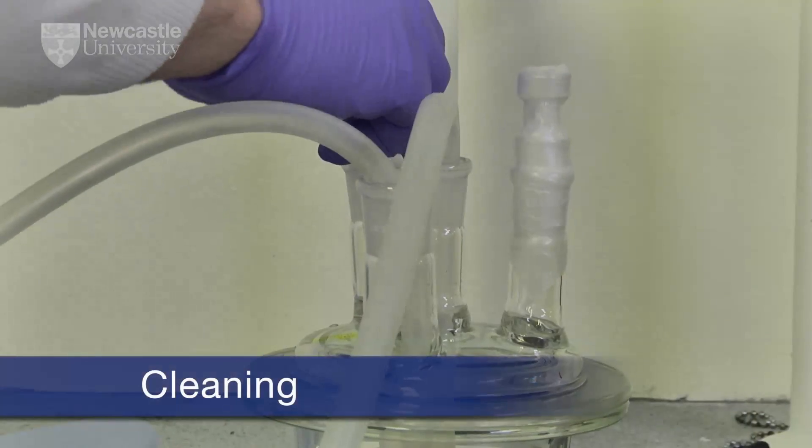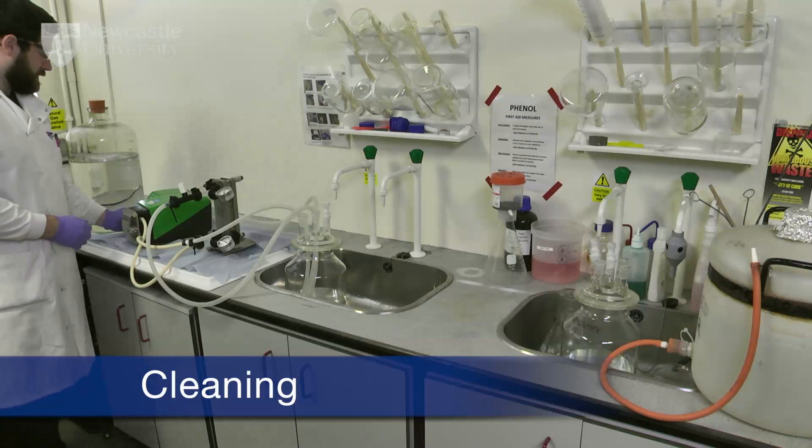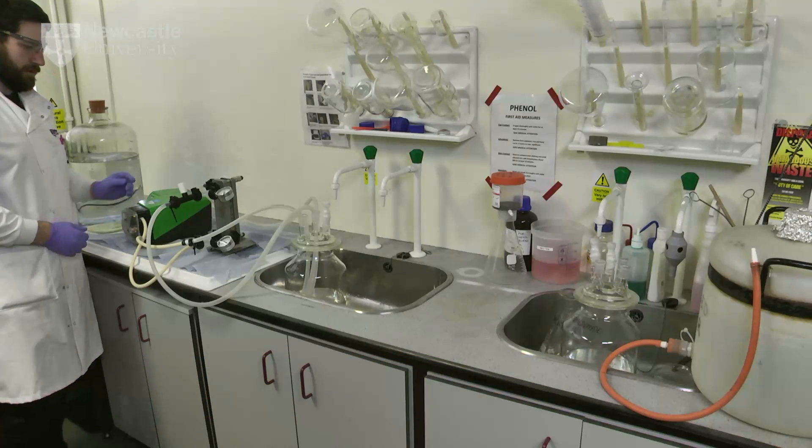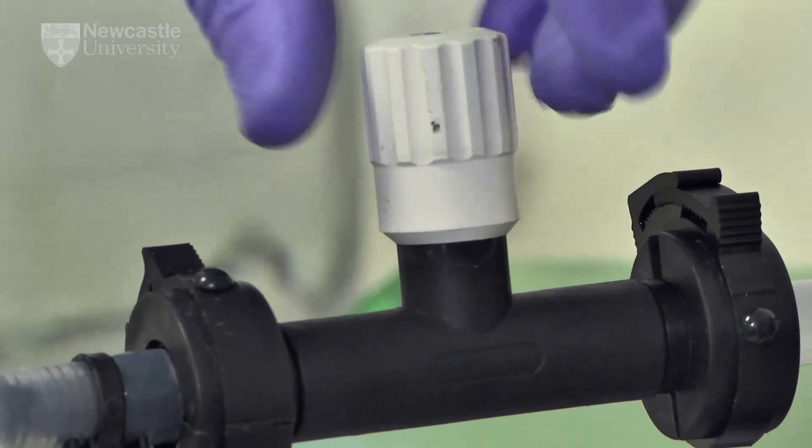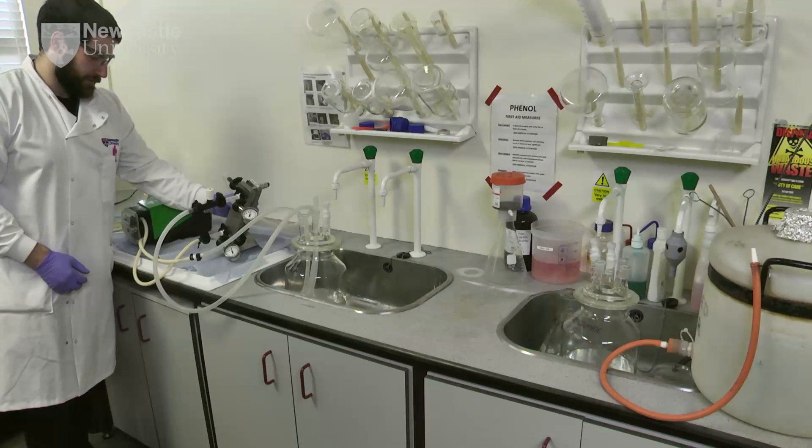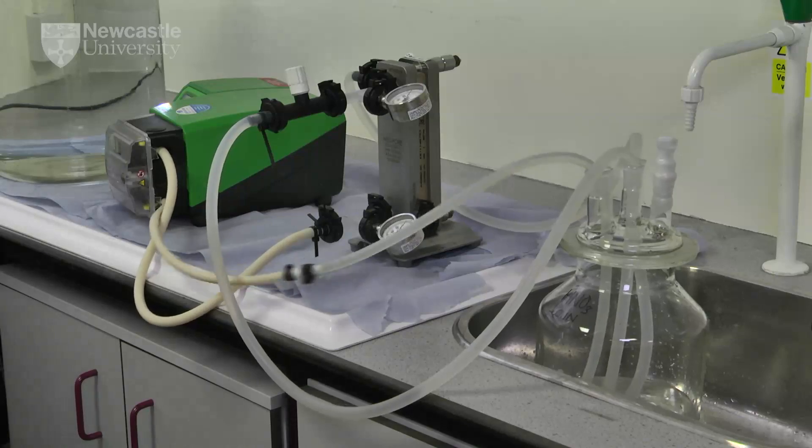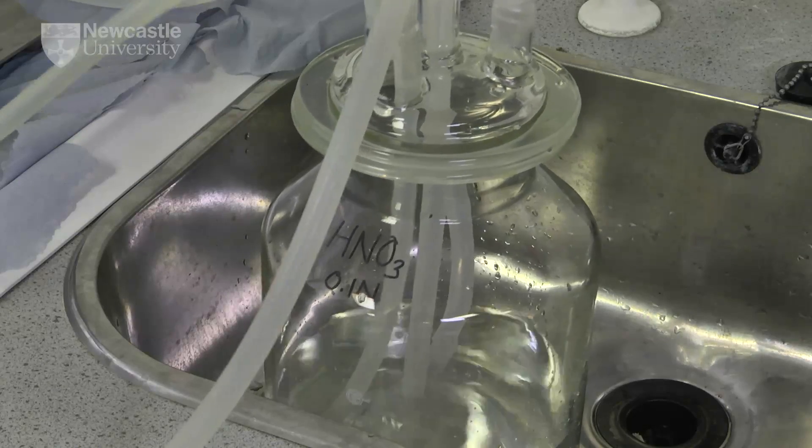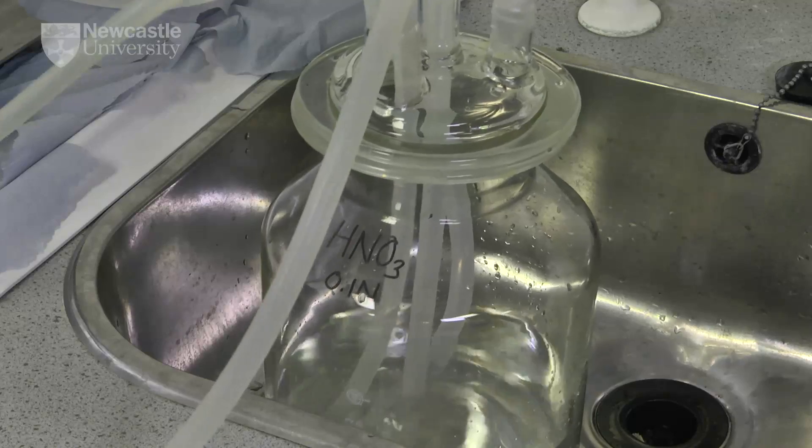A cleaning solution is then recirculated through the system for approximately 30 minutes. The retentate valve should be fully opened and closed several times to wet all internal surfaces. The solution, concentration and duration of cleaning is dependent upon the filtration cassette selected.